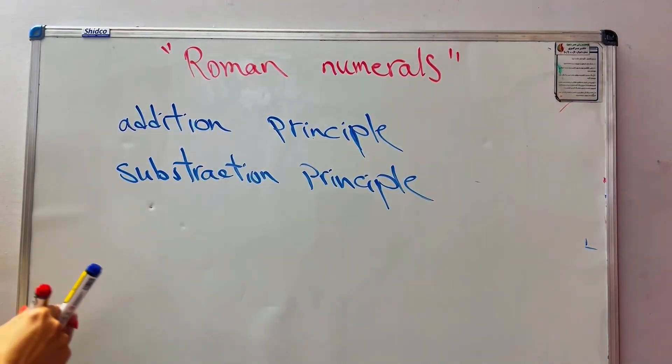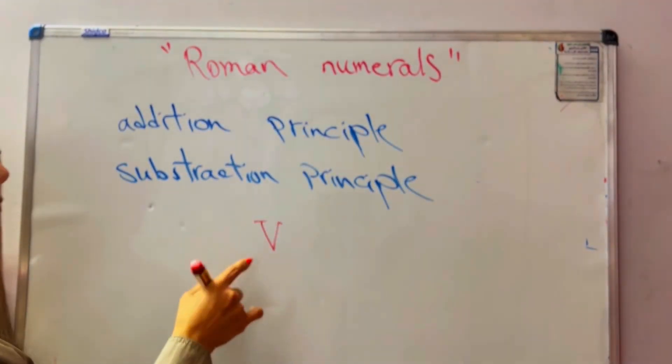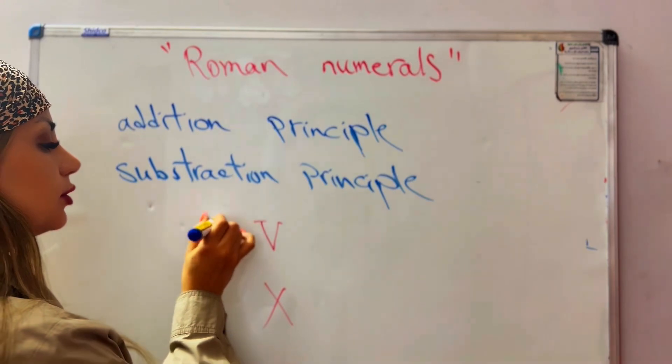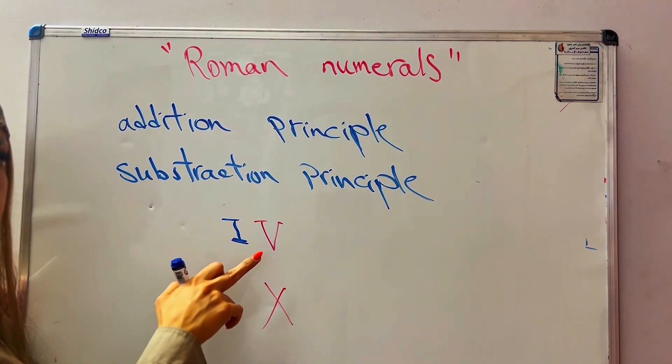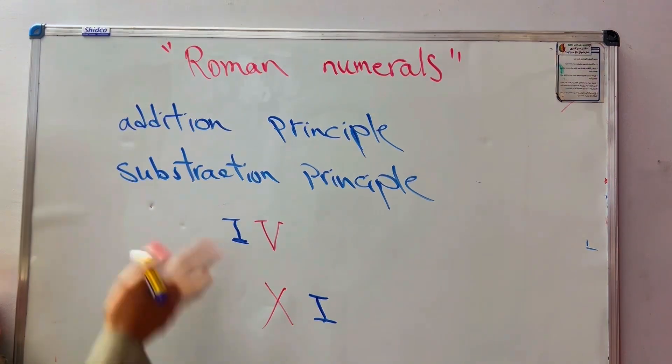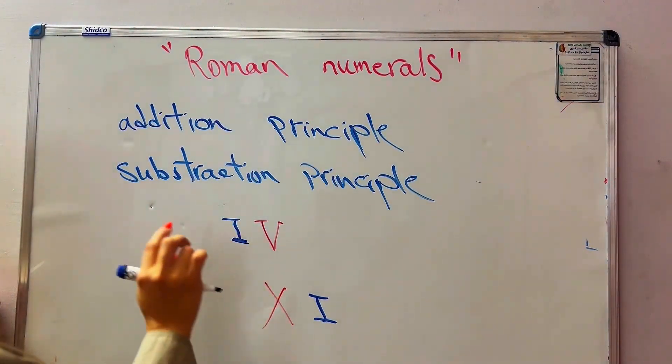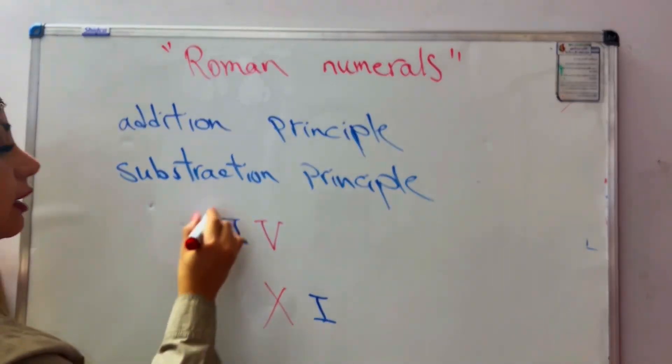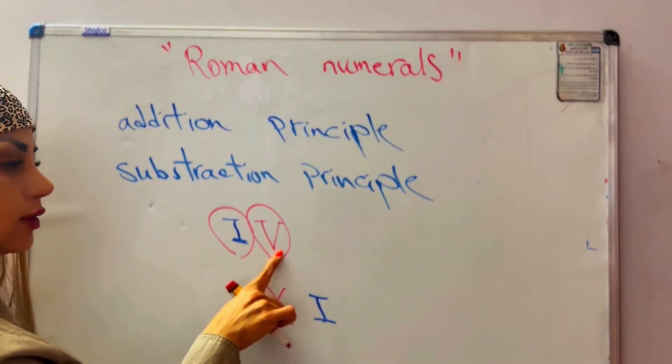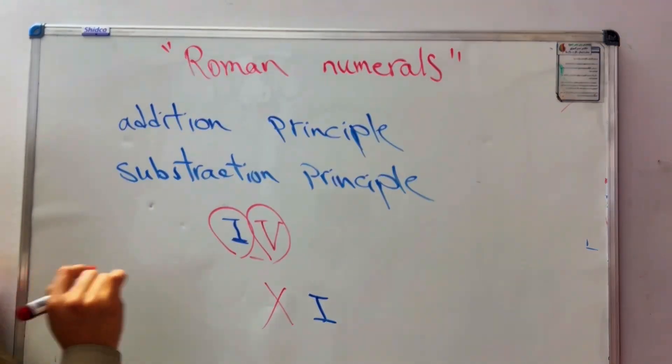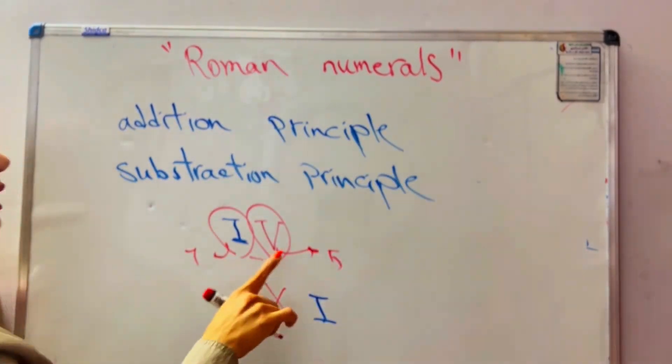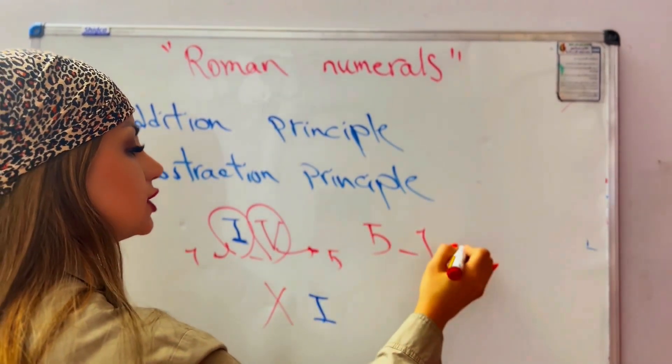As I mentioned earlier, these symbols are bases. When a smaller symbol comes before a larger one, or when a smaller comes after a larger one, we use these two options. In this case we use the subtraction principle. We have two sets of symbols: this is a smaller one and this is a larger one. We subtract from each other. This shows one and this shows five. So five minus one equals four.